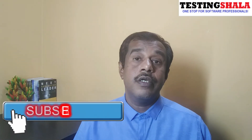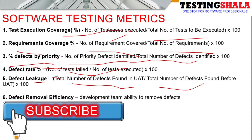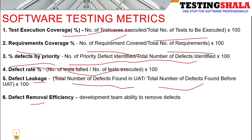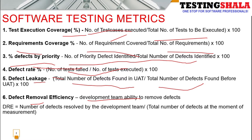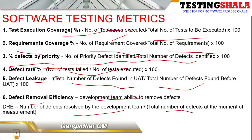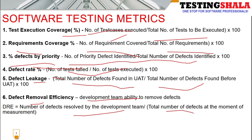The sixth metric is defect removal efficiency (DRE). This metric is used to check the ability of the development team to remove defects. The formula is: number of defects resolved by the development team divided by the total number of defects in the system. If there are 100 defects and developers fix 90, the defect removal efficiency is 90%, meaning only 10% of defects remain unfixed.